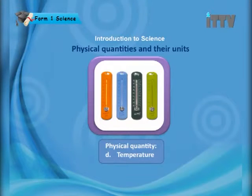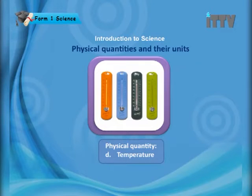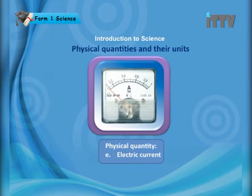Here in this picture they show you a stopwatch — you can use a stopwatch to measure time. The next physical quantity is temperature. We use thermometers to measure temperature. These are examples of different thermometers. And lastly is electric current, which is also a physical quantity. You would see further in the lesson the instrument used to measure electric current.